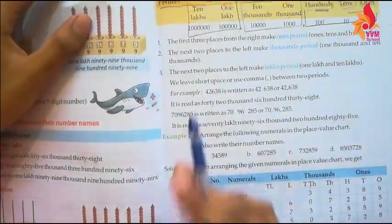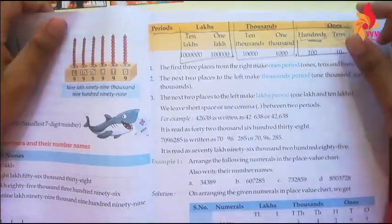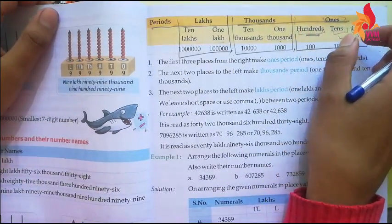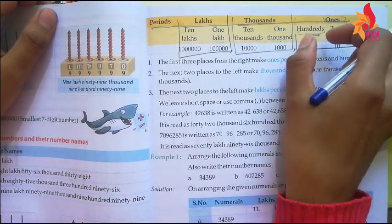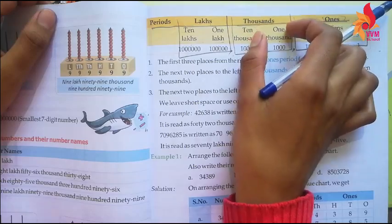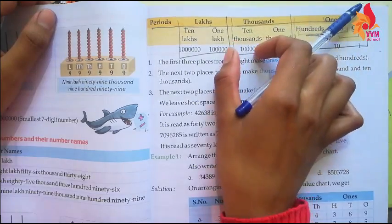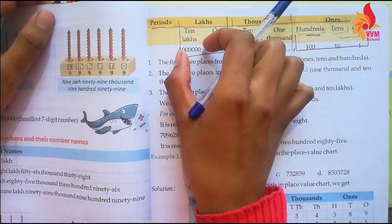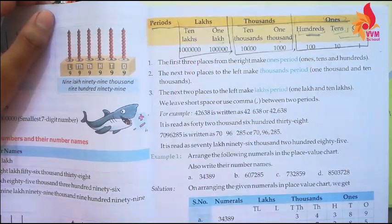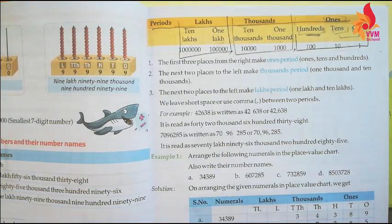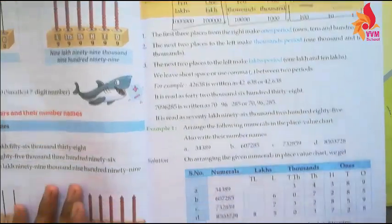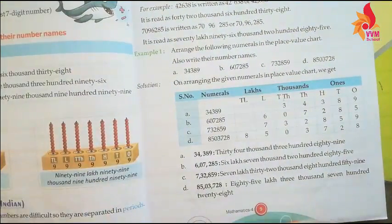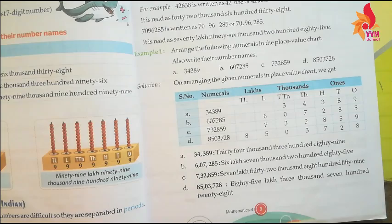This is the Indian place value chart. It includes: ones, tens, hundreds — that is the ones period; then thousands, ten thousands — the thousands period; then lakhs, one lakh, ten lakh — the lakhs period. Next we learn how to make a place value chart.